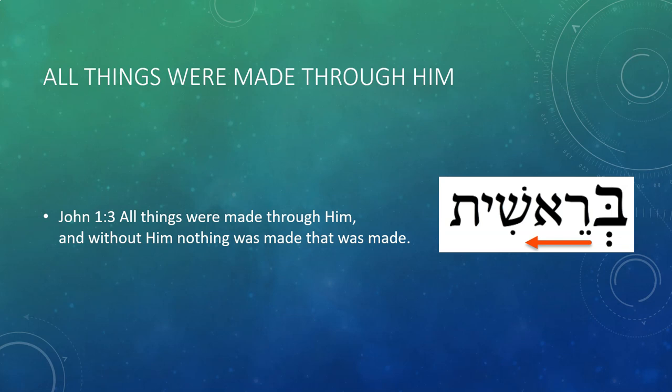Furthermore, the rabbis point out that the letter Bet is like an opening. As you read in Hebrew from right to left, in the direction of the arrow on your screen, the rabbis explain that the entire Torah, the entire scriptures, everything — and even everything that was created — comes out of that first letter. So the law and even creation itself come out of it. And they ponder why was this letter chosen instead of Aleph?